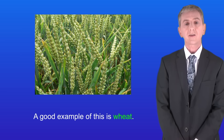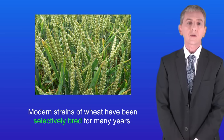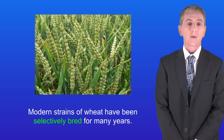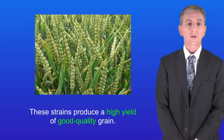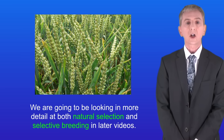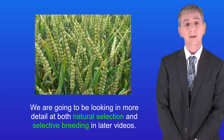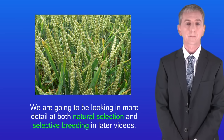A good example of selective breeding is wheat. Modern strains of wheat have been selectively bred for many years. These strains produce a high yield of good quality grain. We're going to be looking in more detail at both natural selection and selective breeding in later videos.